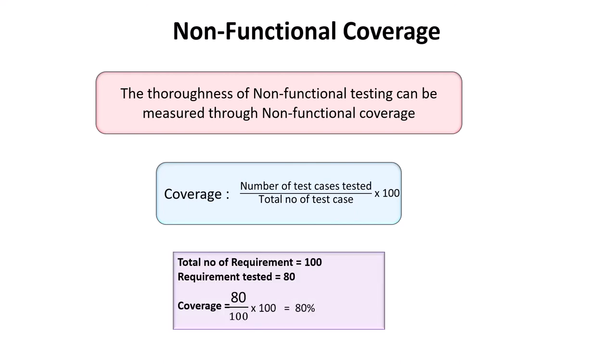Let's see this with an example. Suppose you have a total number of requirements equal to 100 and requirements tested is 80. Then non-functional coverage equals 80 divided by 100, multiplied by 100, which equals 80%. That means 80% of the non-functional requirements are tested.